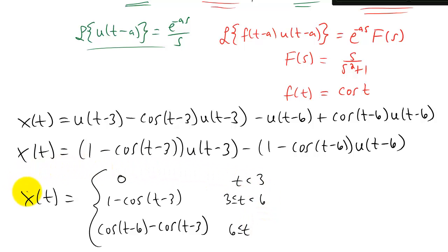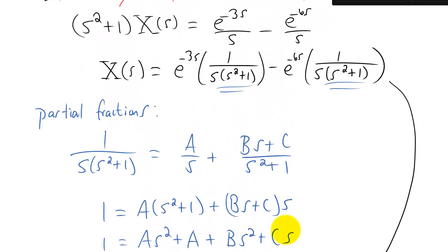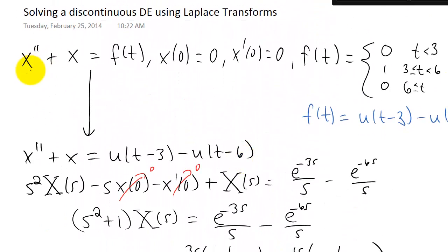Plot it with your favorite plotting tool. And compare that result to what you expect to get from a mass on a spring with no initial position or velocity with a forcing function that looks something like this.